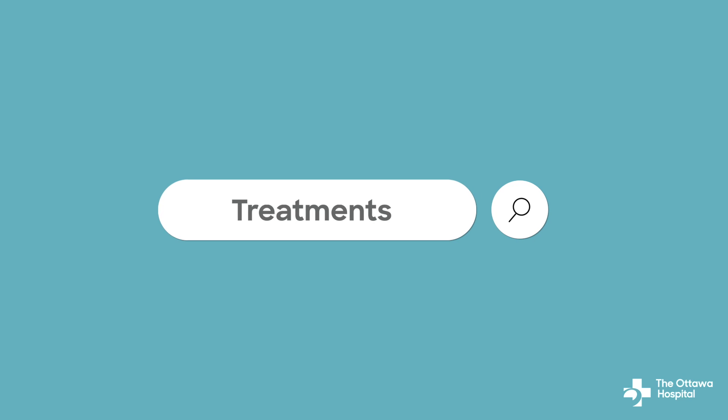Treatment for acute diarrhea is typically watchful waiting or treatment of infectious causes. Treatments for chronic diarrhea are more varied and complex and depend on the specific cause. They may include medications to treat chronic bowel disorders, such as celiac disease or inflammatory bowel disease.